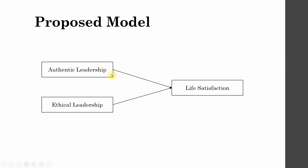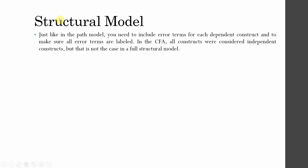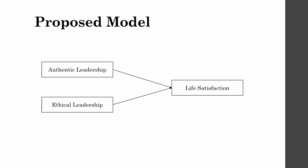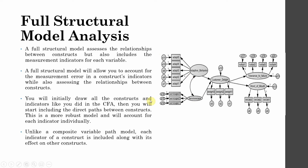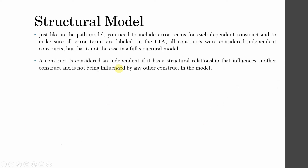This is our proposed model that we are going to check in this session. Just like a path model, you need to include error terms for each dependent construct and make sure all error terms are labeled. In CFA, all constructs were considered independent and were covaried. But in a full structural model, some variables are endogenous variables — that's why they are not covaried. Rather, we are looking at the impact of one variable on the other. A construct is considered independent if it has a structural relationship that influences another construct and is not being influenced by any other construct in the model.